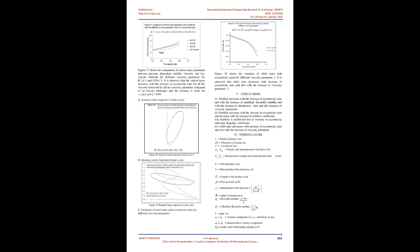Figure 15 shows the variation of critical mass parameter with viscosity parameter for different slenderness ratios. It is observed that critical mass parameter increases linearly with viscosity parameter and with the increase of slenderness ratio. Figure 16 shows the variation of critical mass parameter with slenderness ratio for different viscosity coefficients. It is observed that critical mass parameter increases linearly with slenderness ratio and with the increase of viscosity parameter.